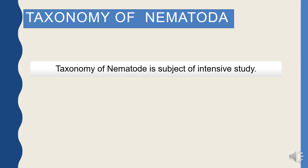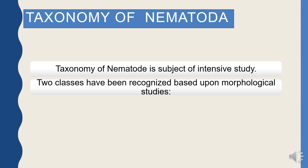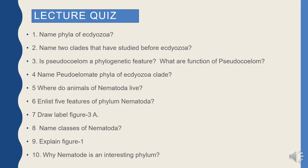The taxonomy of nematodes is a subject of intense study and much disagreement among scientists and nematologists. Even morphological features and molecular studies show many contradictions. Morphologically, this phylum is divided into two classes: Class Enoplea and Class Chromadorea. This concludes this two-to-three lecture. You can see the answers. Thank you very much. If you have questions, please submit and subscribe.